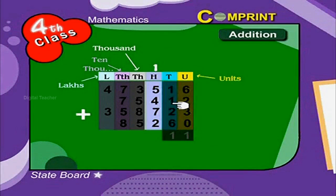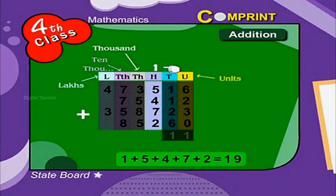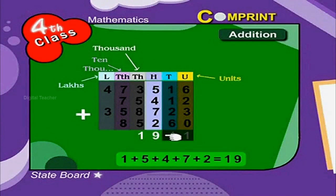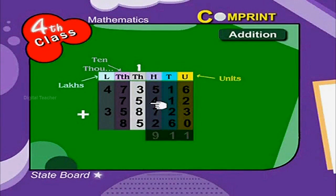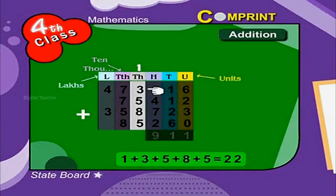Now let us add the digits of the hundreds place. 1 plus 5 plus 4 plus 7 plus 2 is equal to 19. Let us carry 1 to the thousands place. Now let us add the digits of the thousands place. That is 1 plus 3 plus 5 plus 8 plus 5 is equal to 22.